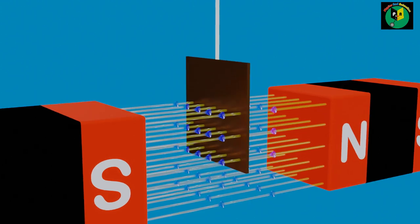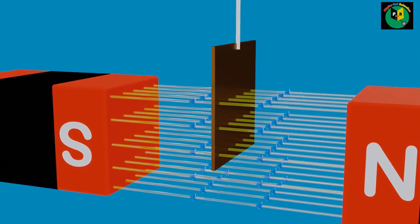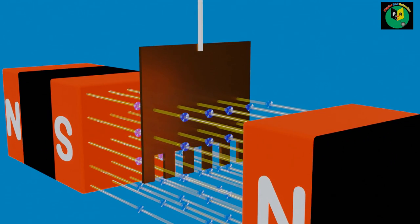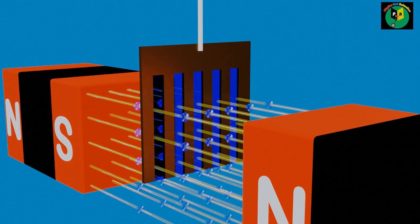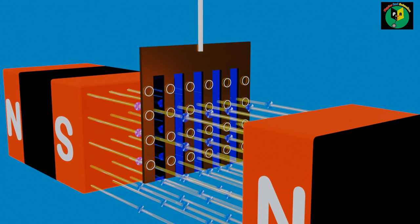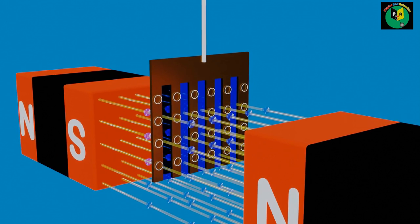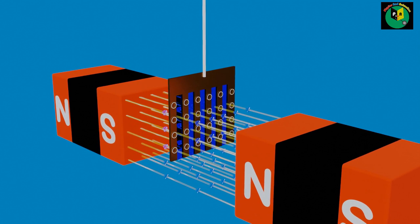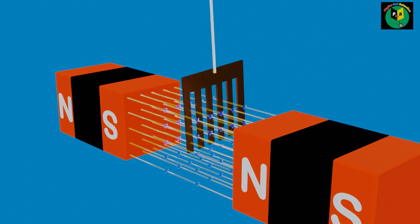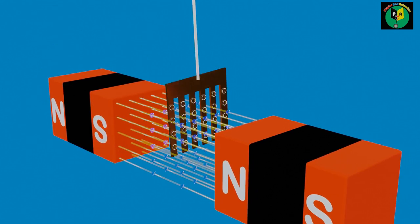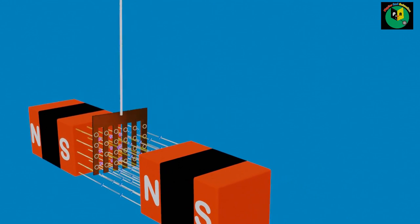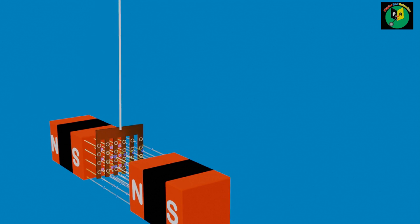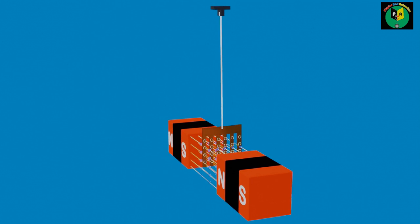To reduce such damping, we need to reduce the strength of the Eddy Current. For that, slots can be used. The air between these slots acts as a barrier to the Eddy Current, so Eddy Current flows in smaller loops instead of larger loops. Since Eddy Current is directly proportional to the area of the loop, the strength of the Eddy Current reduces, and the plate can oscillate for a longer duration. Please note that we can minimize Eddy Current losses but cannot eliminate them completely.